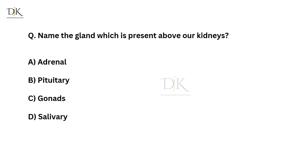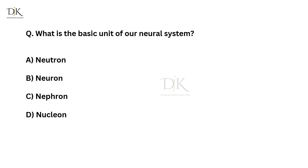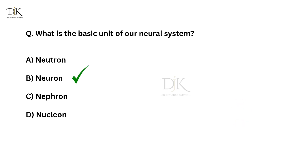Name the gland which is present above our kidneys. Correct answer is adrenal. What is the basic unit of our neural system? Correct answer is neuron.